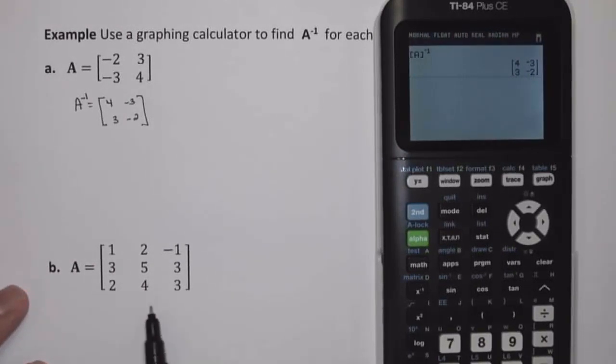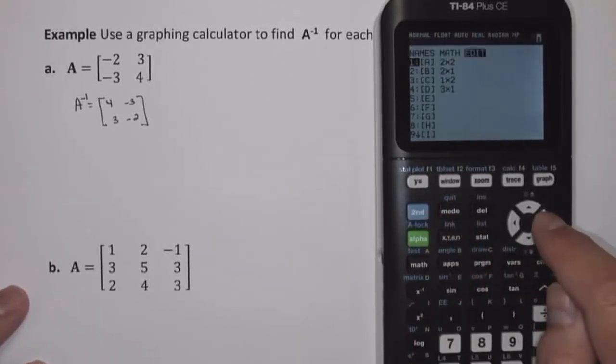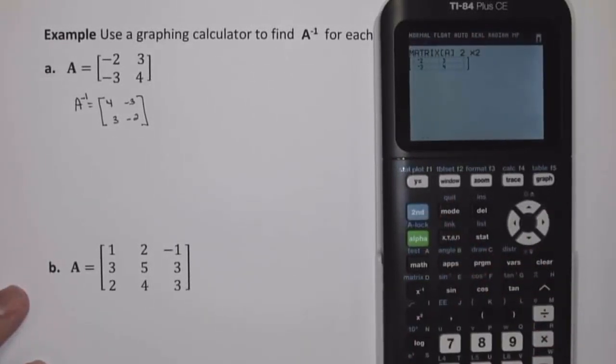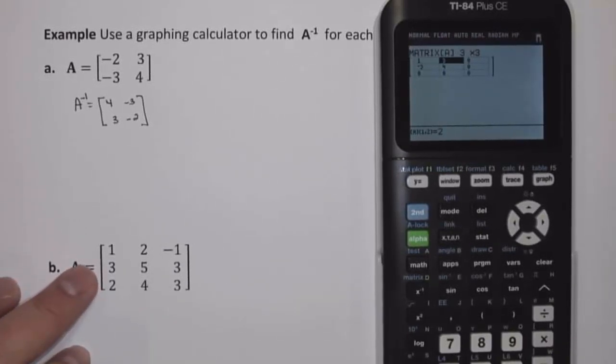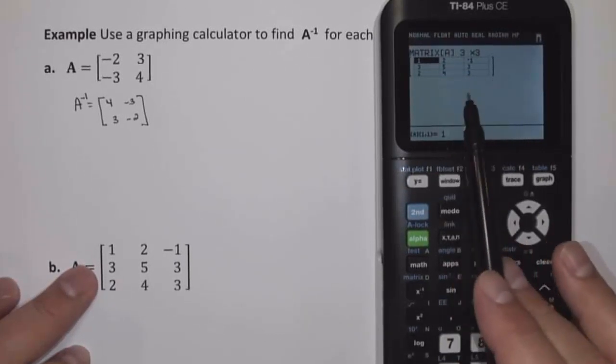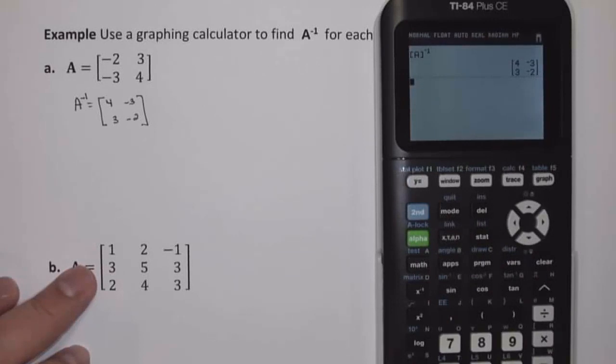Now let's look at Part B. In Part B, we have a 3x3 matrix. So I'm going to start by entering this 3x3 matrix into Matrix A in my calculator. So this is a 3x3 matrix, and I'm going to enter it in: 1, 2, negative 1, 3, 5, 3, 2, 4, 3. So again, I have my matrix entered into the calculator. 2nd quit to get back to the home screen.